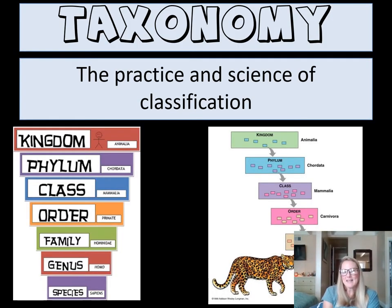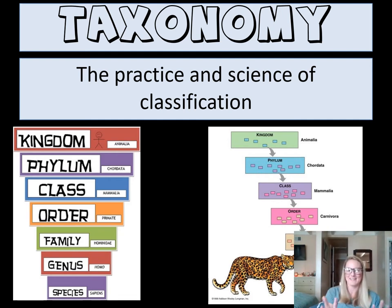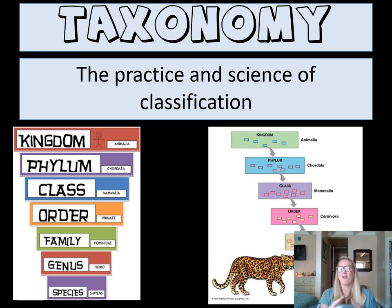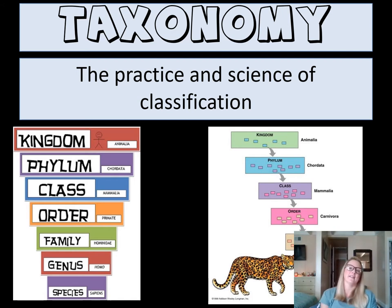Taxonomy is the practice and science of classifying. If you're a taxonomer, you take organisms and classify them. That same system that Linnaeus created is still used today, so every organism has their own unique organization. Also note that taxonomy doesn't always stay the same — as new information and new evidence comes out, organisms can be reclassified into different groups based upon what is found out about the species.